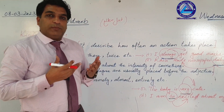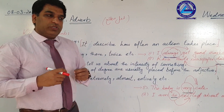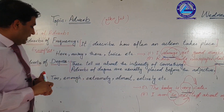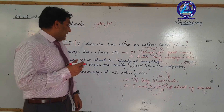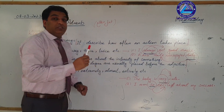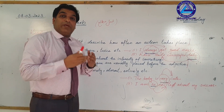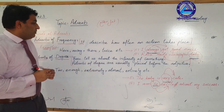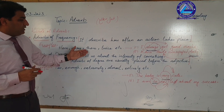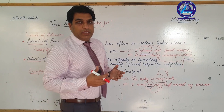Adverb of degree tells how much something is done. Adverb of frequency tells how many times an action has been done — for example: always, away, there, twice.